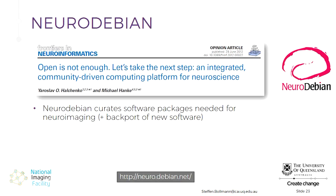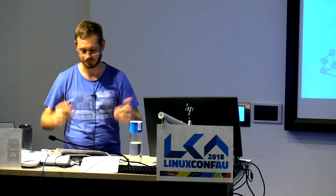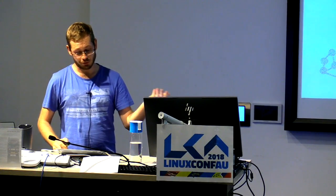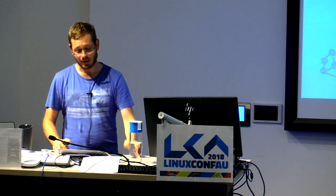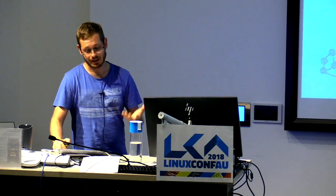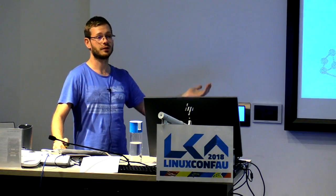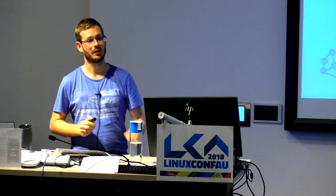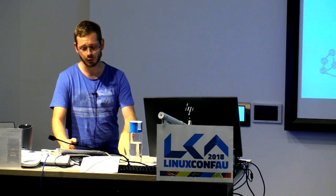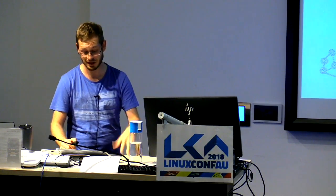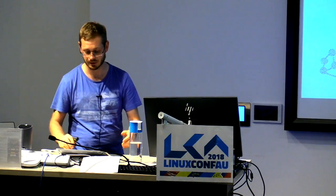Now we can finally start extracting information from our data. The first project I want to highlight is NeuroDebian, which makes life much easier — it builds and curates software packages needed for neuroimaging data analysis. Importantly, they also backport newer software to older versions of Debian, which is fantastic because our operating systems are sometimes quite old and we can't easily update them due to analysis dependencies. They offer a virtual machine for Windows and Mac users and also provide an archive of older software, so you can access a specific old software version to reproduce an analysis from two years ago. There are also other Debian pure blends like Debian Astro, Debian Chem, Debian Med, and Debian Science.